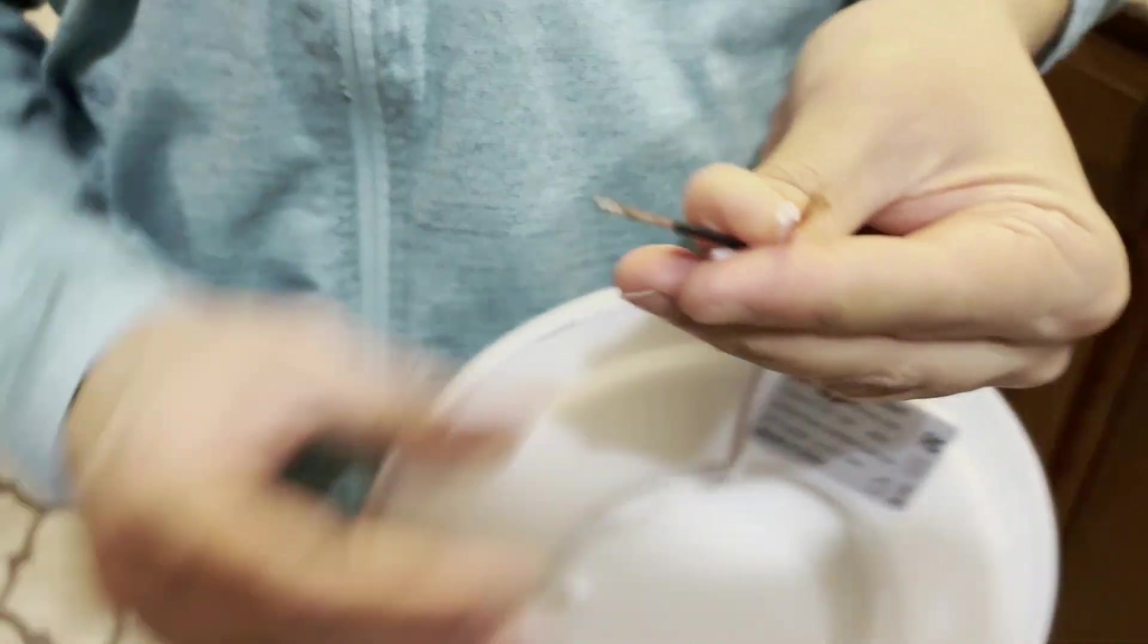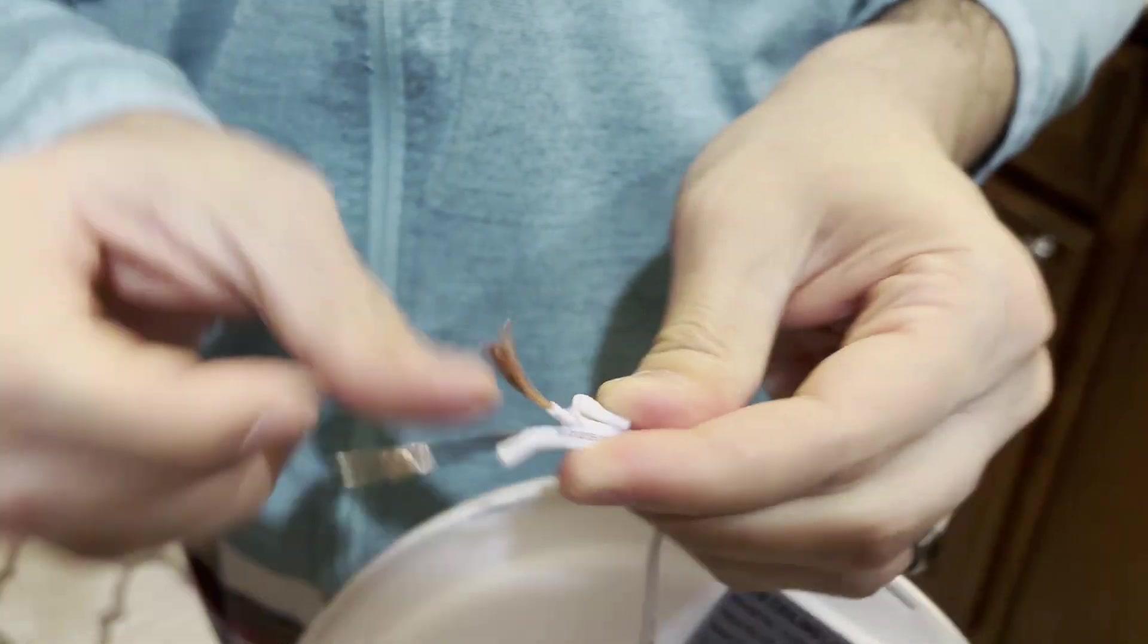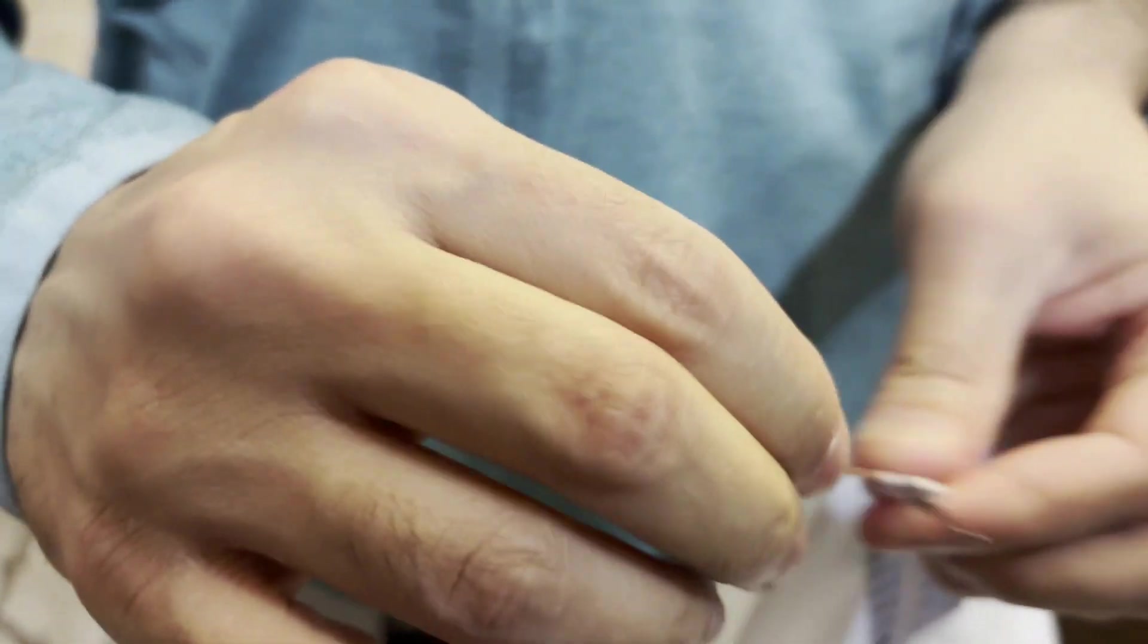Once you have the wire exposed, you're going to use your wire ties to twist it onto the wire on the ceiling.